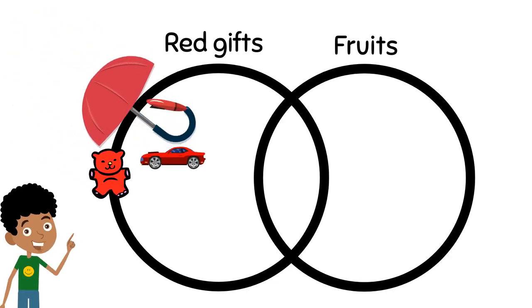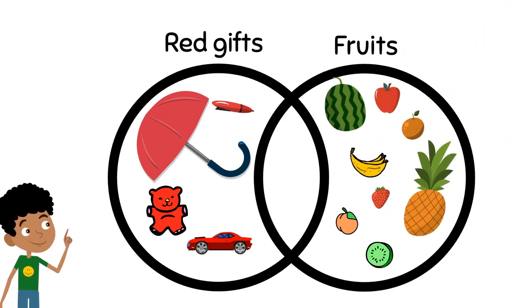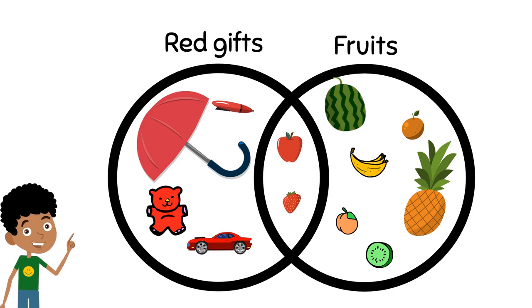Then he started grouping the items inside the circles. Red gifts go inside the first circle. Fruits go inside the second circle. And the red gifts that are also fruits, such as this apple and the strawberry, go into the overlapping part of the circles.